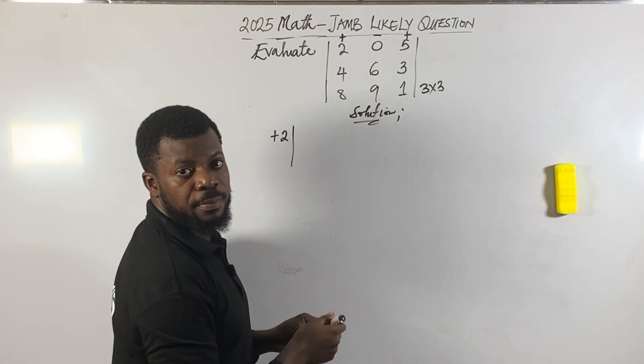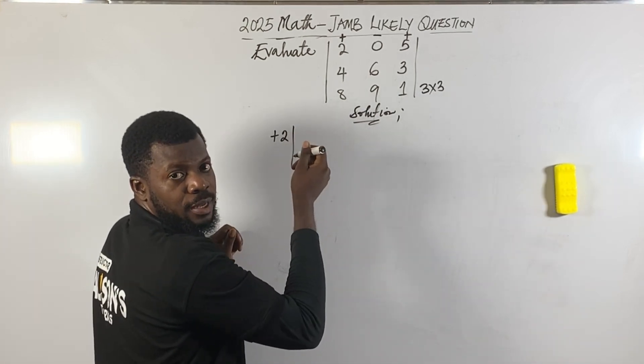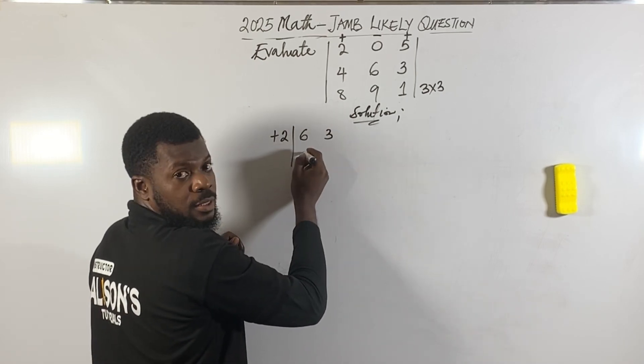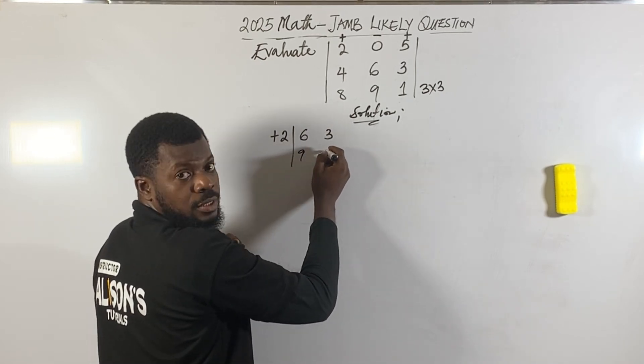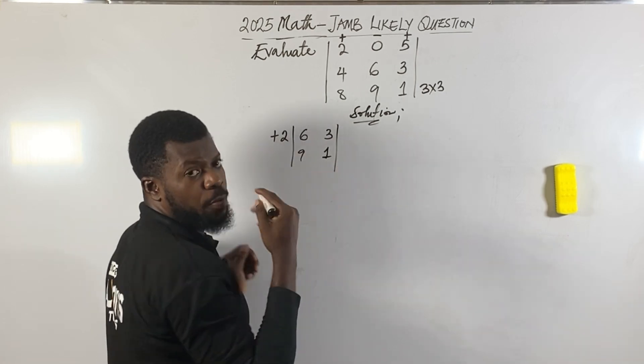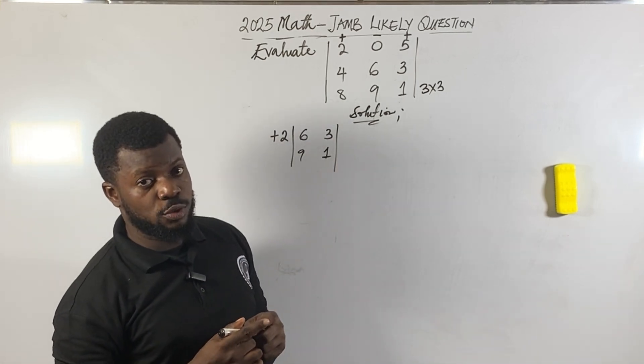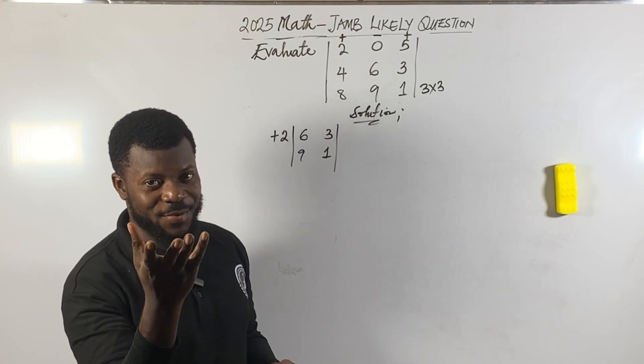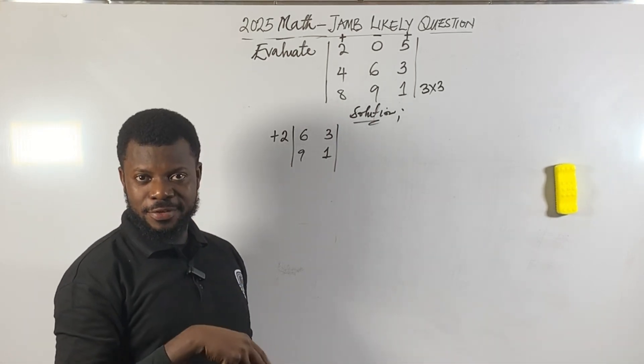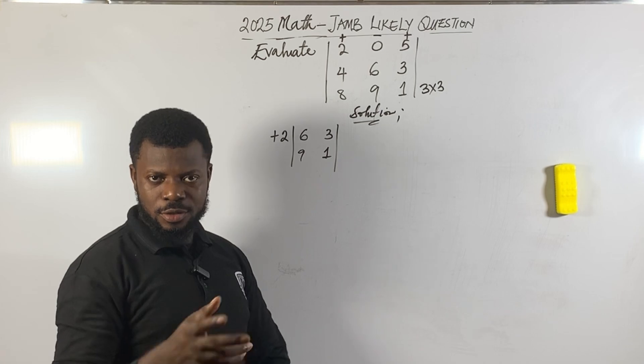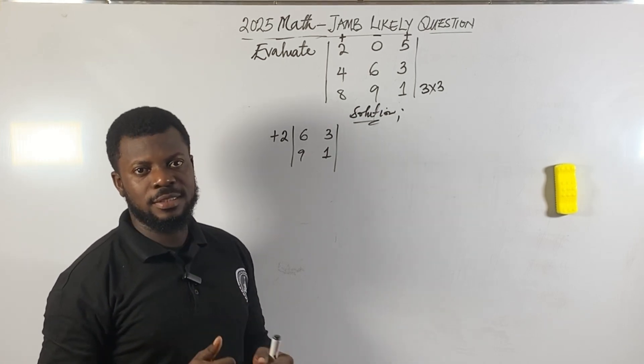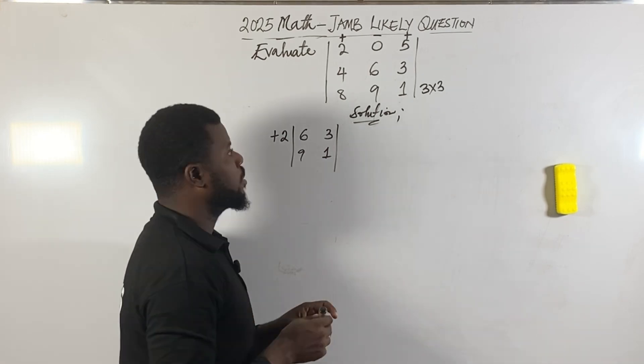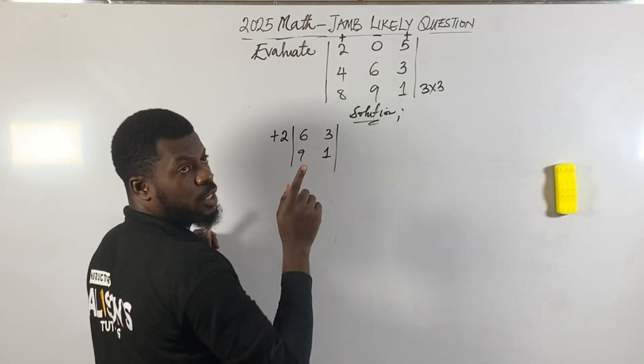What remains is 6, 3, 9, 1. Follow me carefully because this thing can confuse you if you don't follow me closely and watch carefully. Don't forget to like the video. The first thing you're supposed to do is like it, comment, subscribe if you've never subscribed.